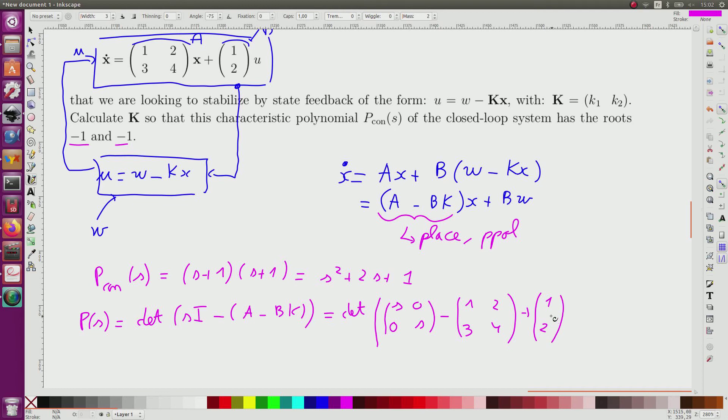multiply by the matrix K, which is equal to K1, K2. And of course I want these two quantities, this one and this one, to be equal. And this will help me to find the K.